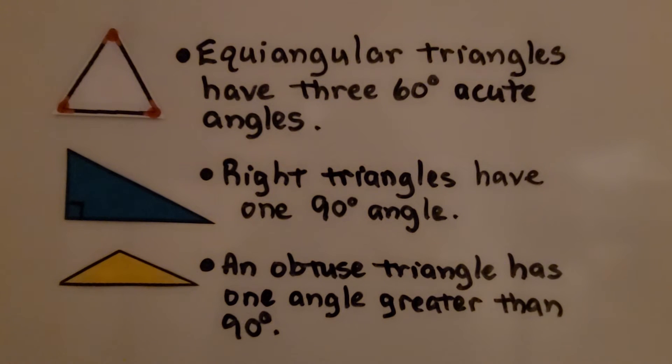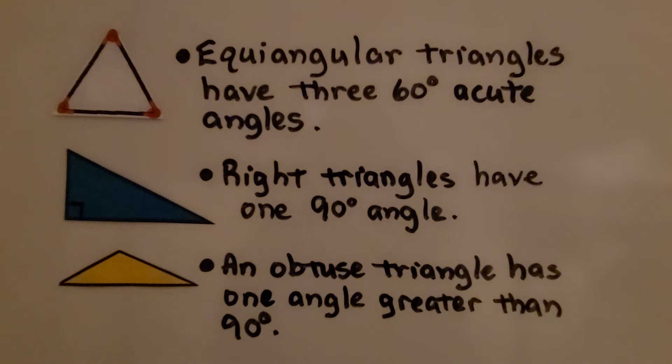So if you remember back from 4th, 5th, and 6th grade, equiangular triangles have three 60-degree acute angles. 60, 60, 60, it'll total 180.